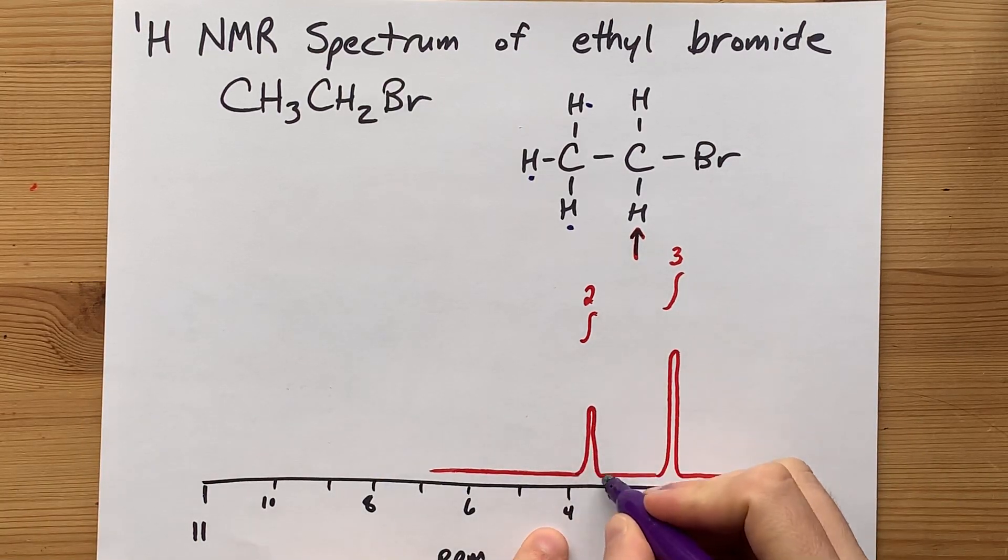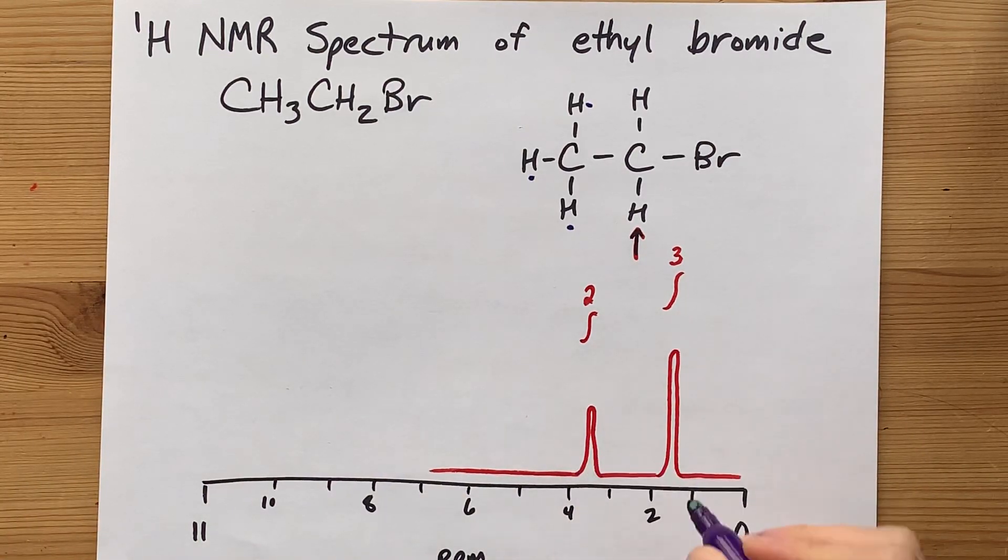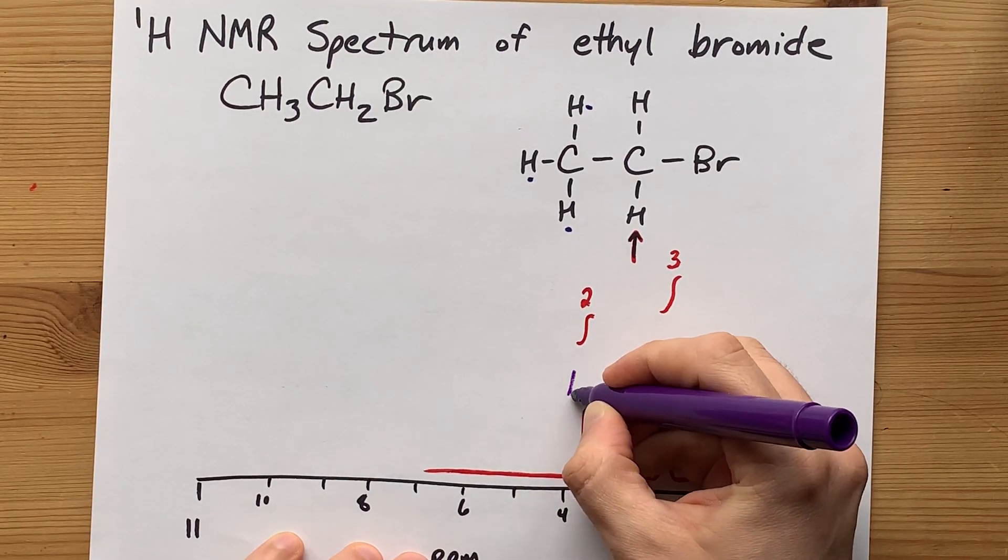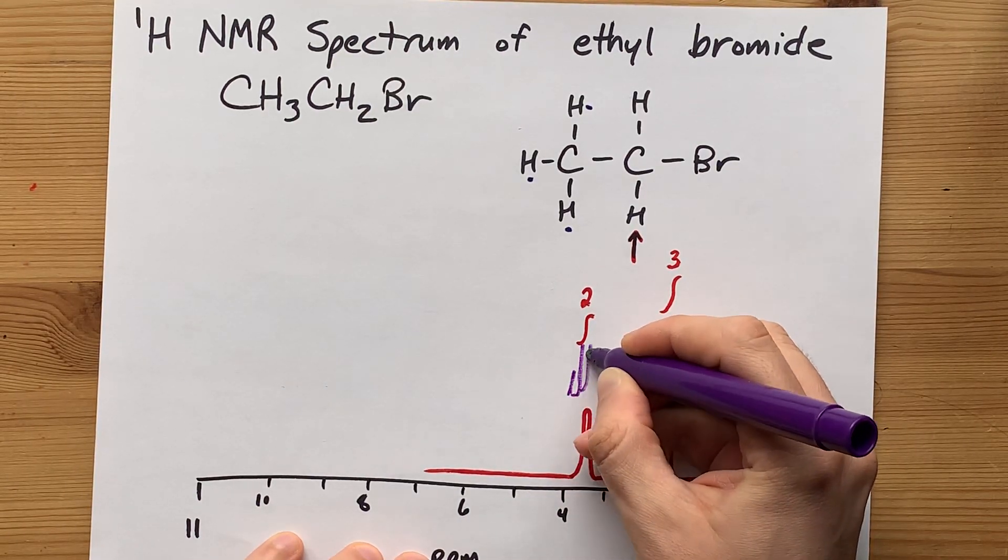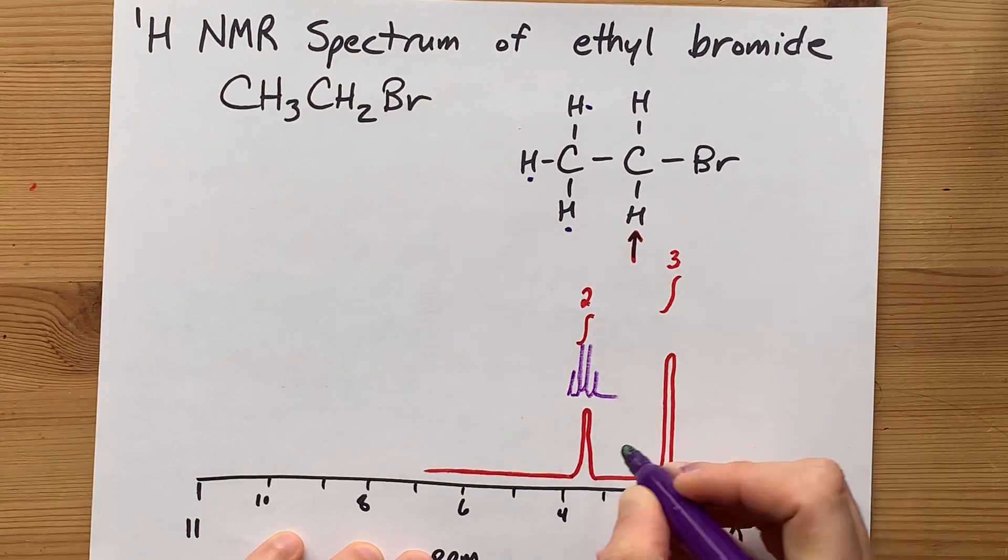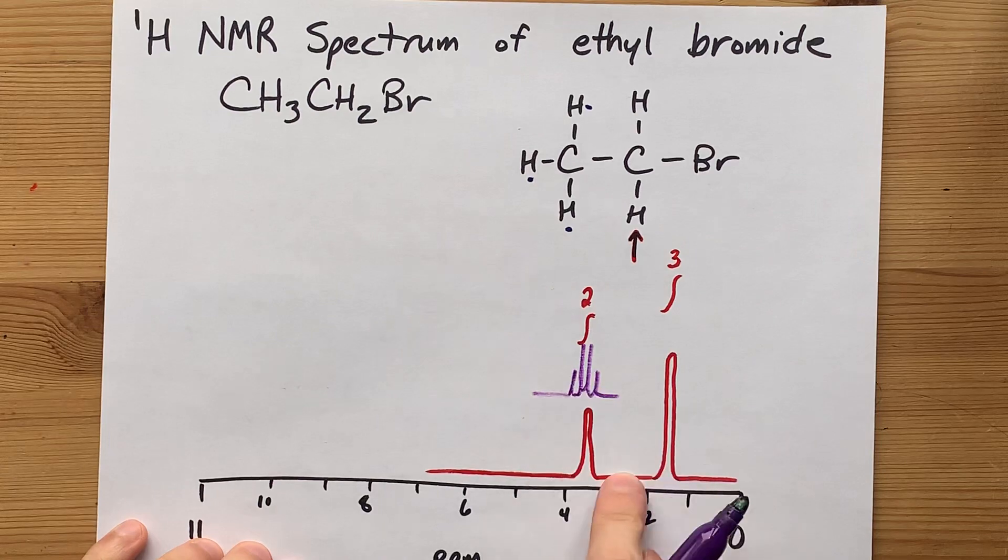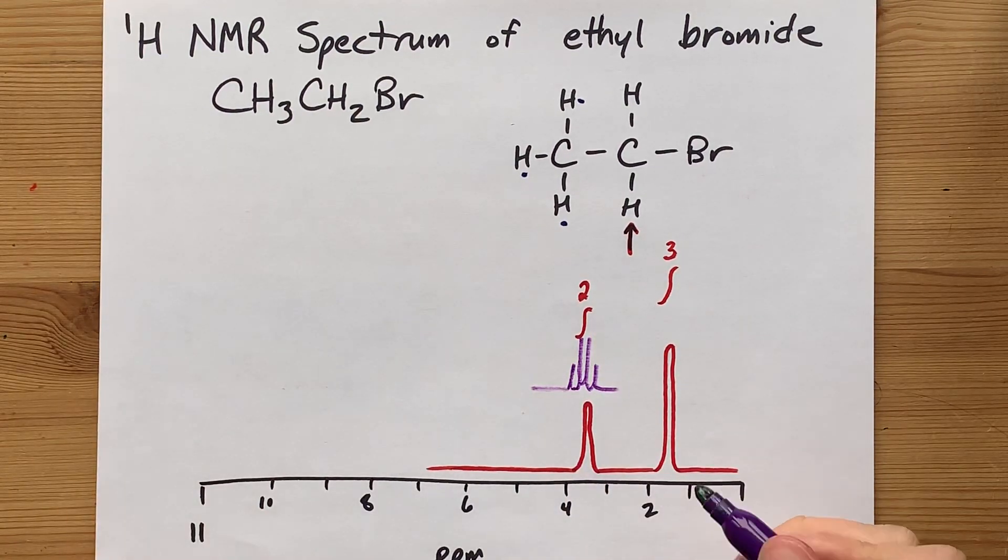So, low-resolution NMR gives you the red. High-resolution NMR would give you peak, peak, peak, peak, like that. They're not going to be spread out that much, but I'm doing that for dramatic effect here.